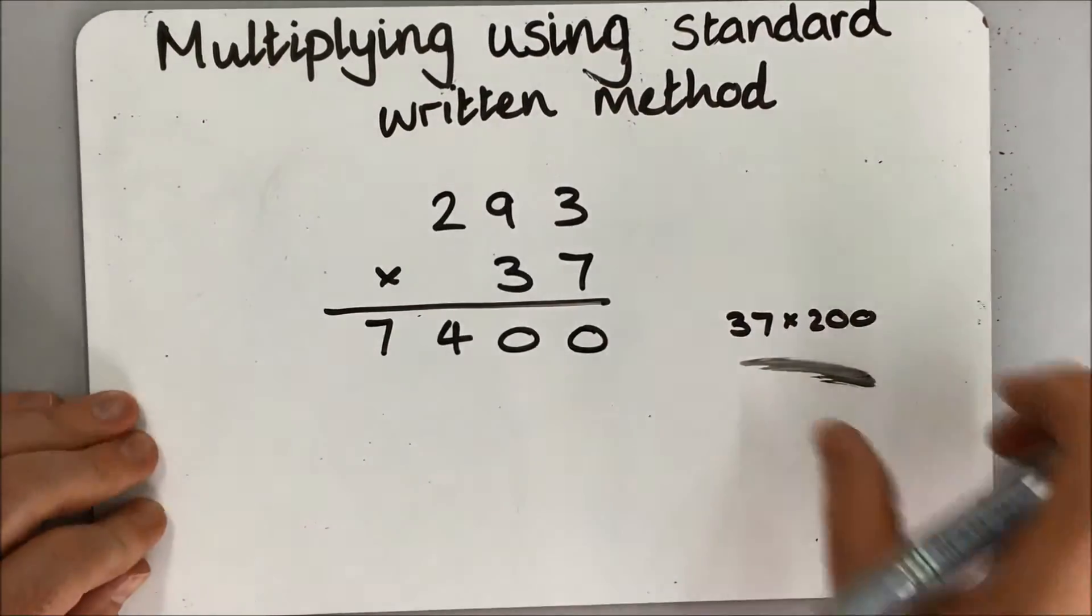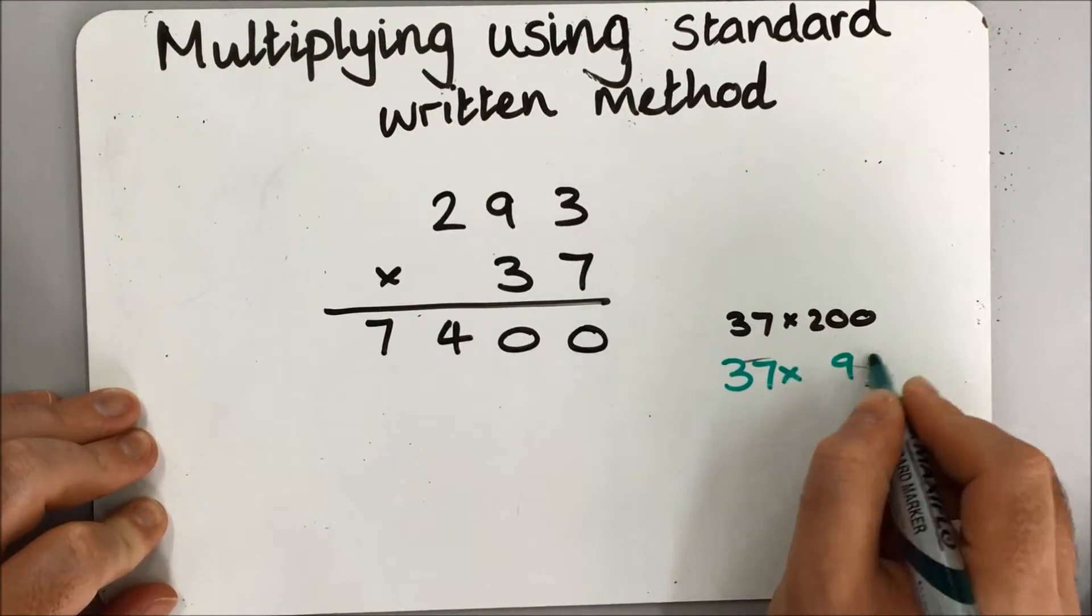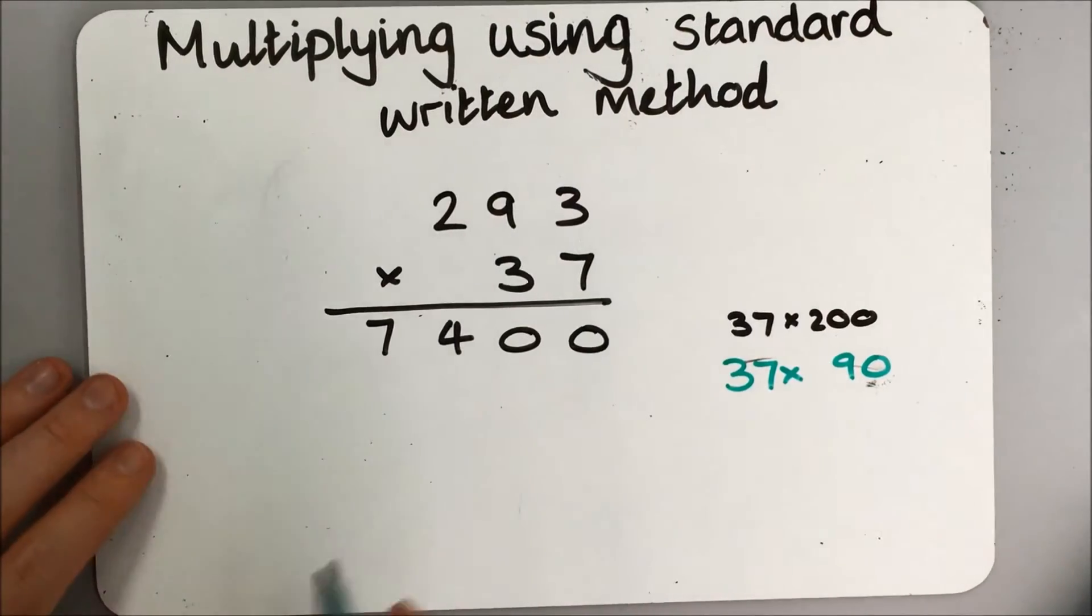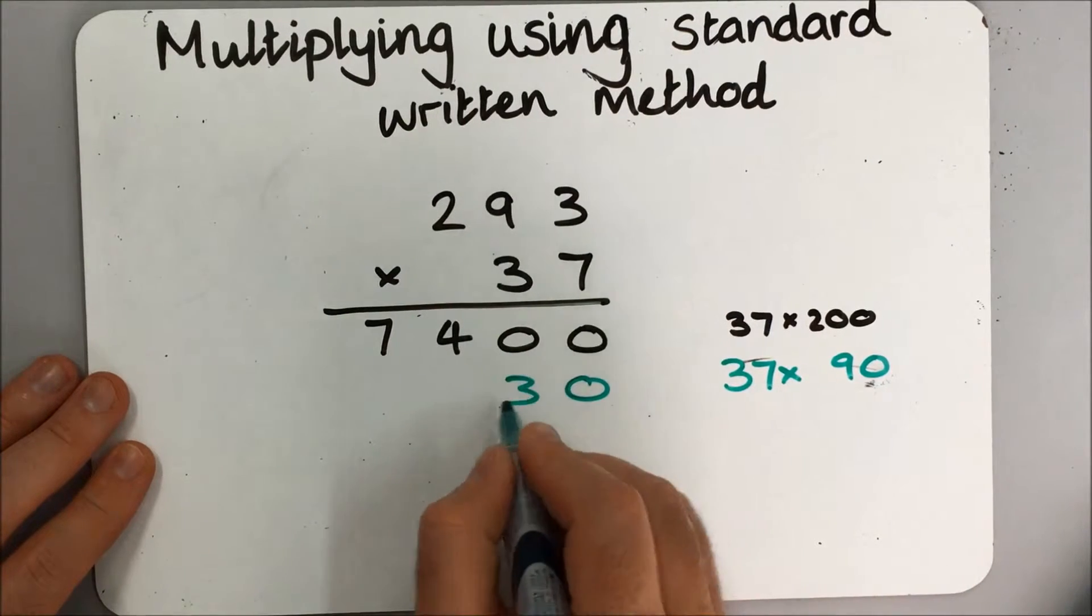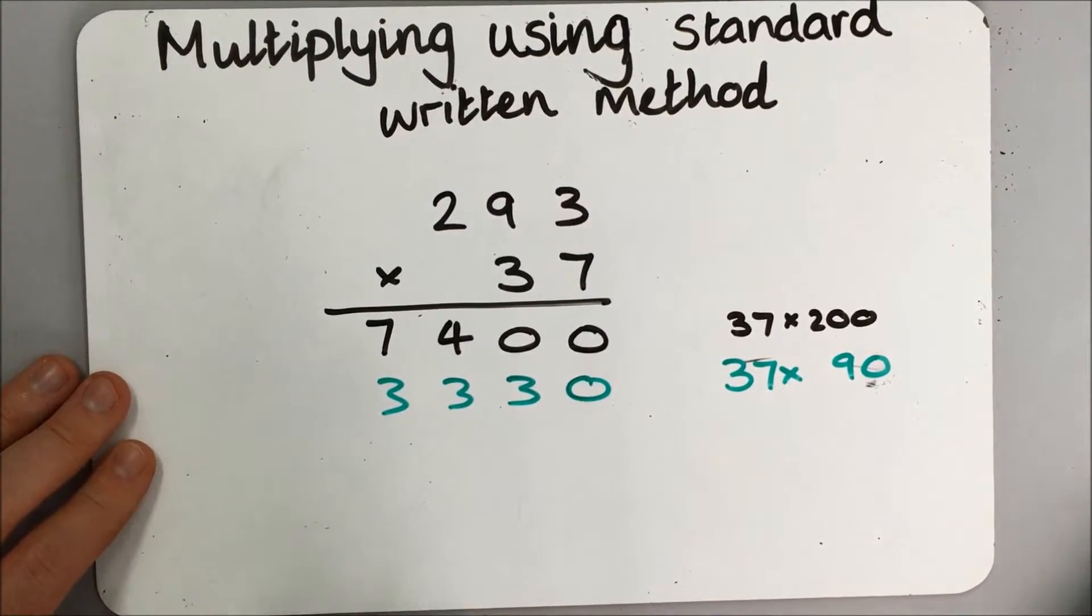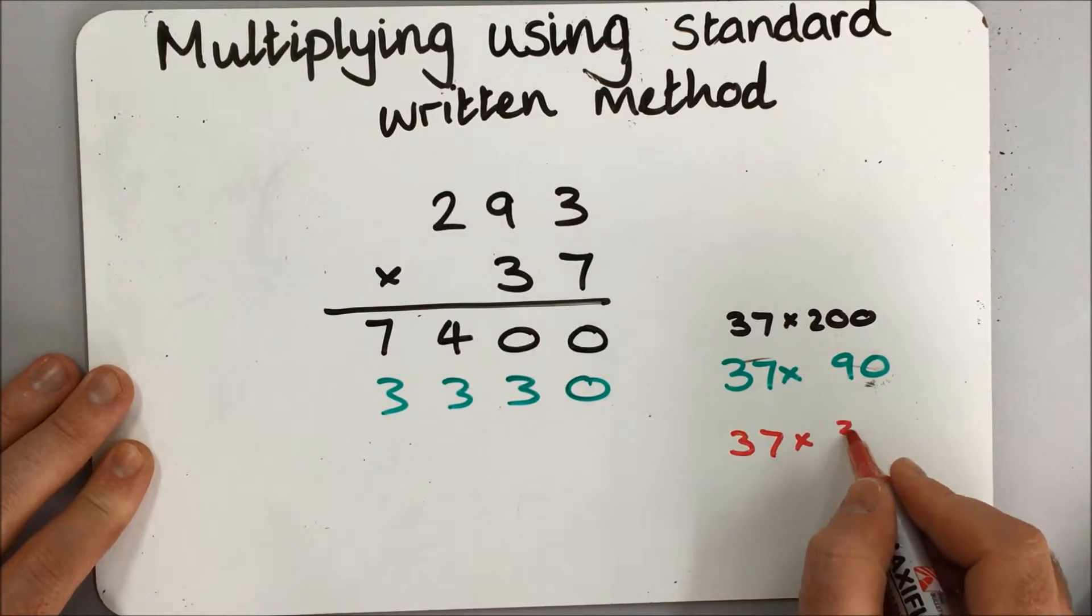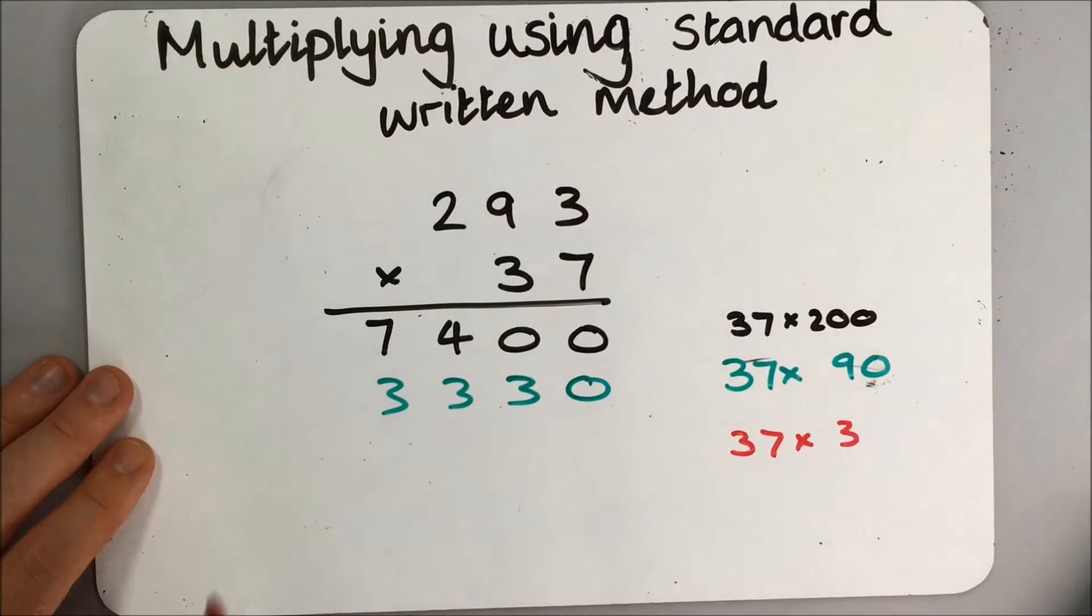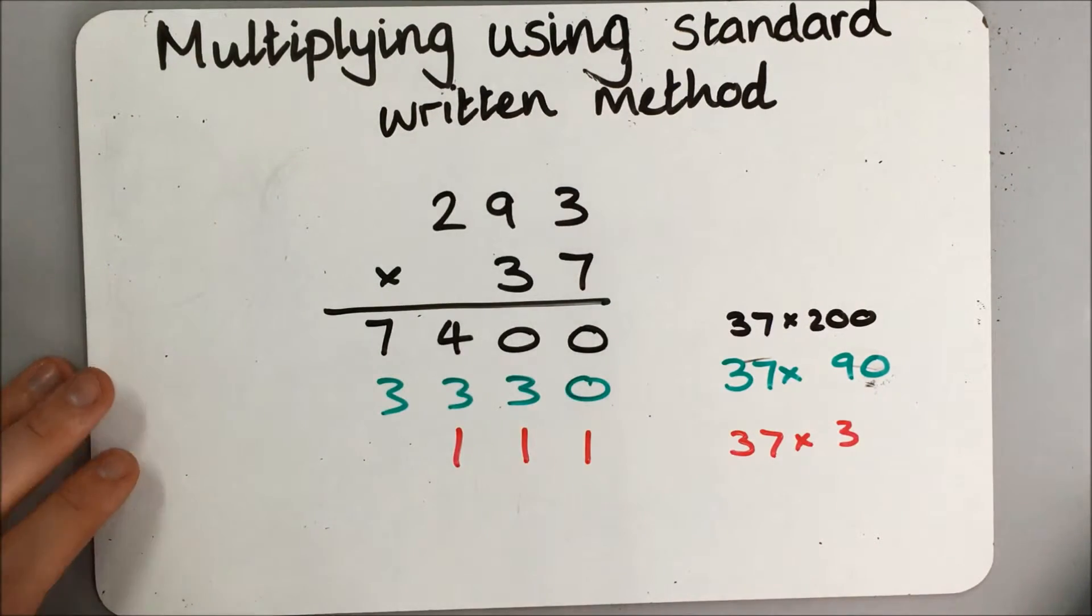It's easy to see 37 times 90. 37 times 90 would be 3330. And the last one which would be 37 times 3, which would give them 111.